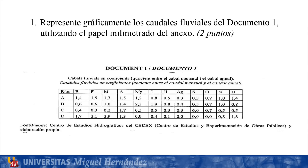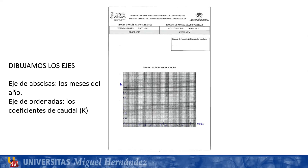We begin with the first question, which asked us to represent graphically the caudales fluviales of document 1, using the millimetral paper of the anexo. They give us a table with the fluvial flow coefficients of four rivers, showing the flows for all months of the year. We use the millimetric paper and begin by drawing the axes. On the x-axis we place the months of the year, indicating the initial of each month.